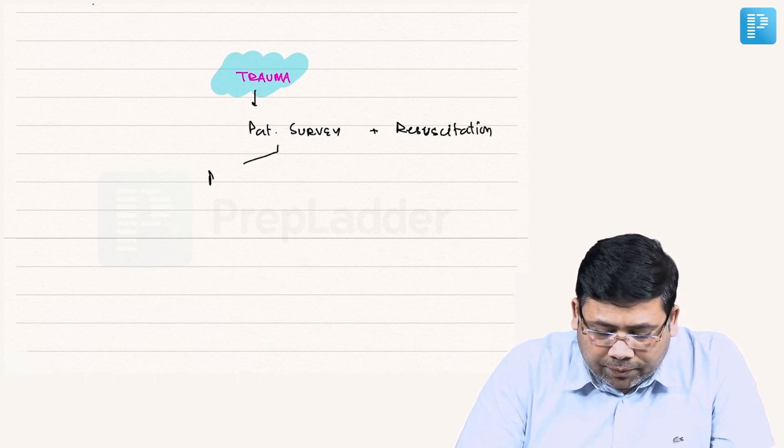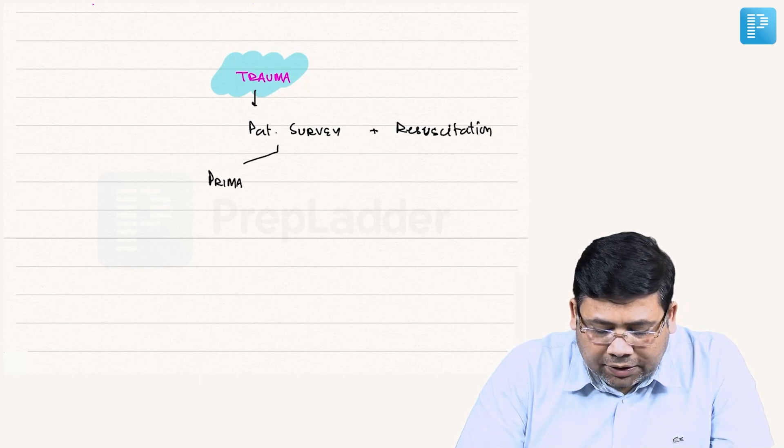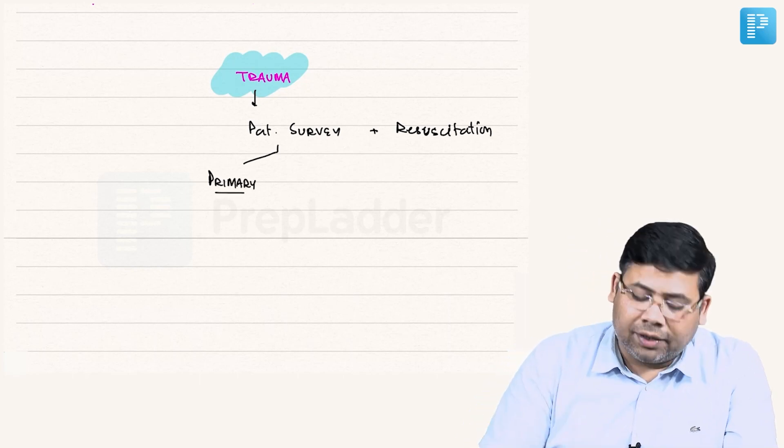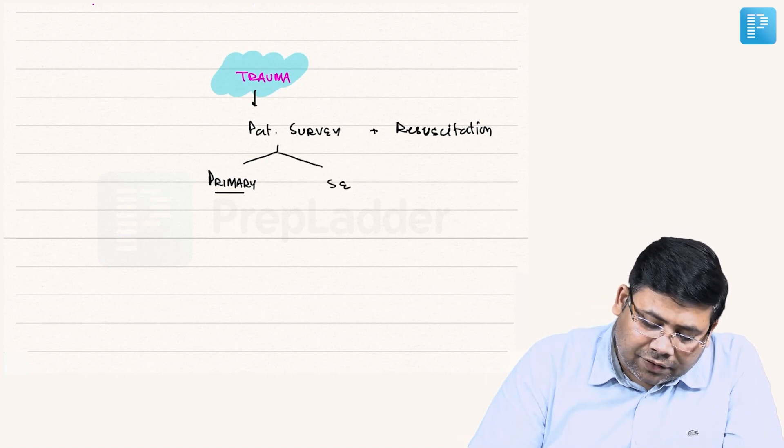Patient survey is of two types. One is the primary survey, which is done at the time of arrival in the ER, and we have the secondary survey, which is done after hemodynamic stabilization.